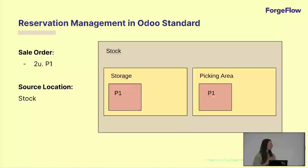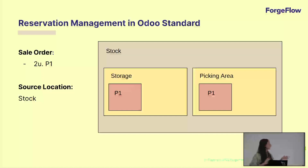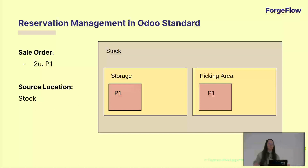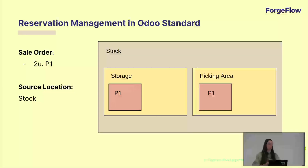Now I want to show you a case scenario where Odoo maybe has some limitations regarding reservation management. Imagine that we have a stock location with a typical warehouse distribution with a storage location and a picking area. Then there's a sale order that came with two units of PERC1. If our source location is stock, Odoo will make a reservation and reserve, for example, one unit in the picking area, and since there is no other stock in that area, it will reserve the other unit in storage.